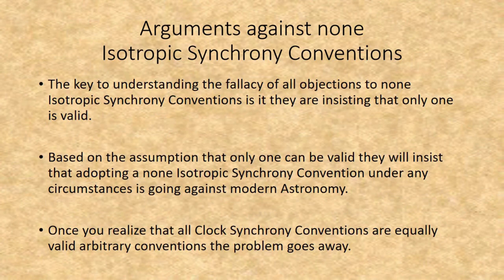The key to understanding the fallacy of all objections to non-isotropic synchrony conventions is that they insist only one convention is valid. Based on the assumption that only one can be valid, they insist that adopting a non-isotropic synchrony convention under any circumstances is going against modern astronomy. Once you realize that all clock synchrony conventions are equally valid, arbitrary conventions, the problem goes away.